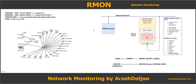SNMP gathers information related to the device itself — for example, CPU usage or counters on an interface. But with RMON, we have more options for gathering information related to the traffic that passes through the device.